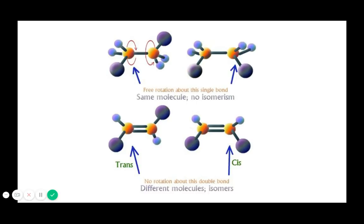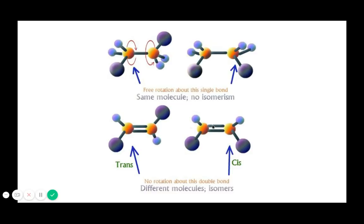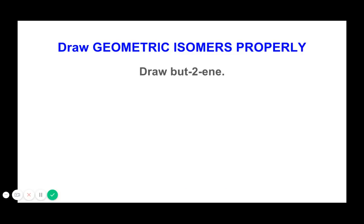As a summary: when you have a single bond, geometric isomerism is not possible because of the free rotation of the sigma bond. When you have a double bond, cis and trans are possible — but not always. Geometric isomerism requires the presence of a pi bond, so in introductory organic chemistry it is associated with the presence of a double bond.